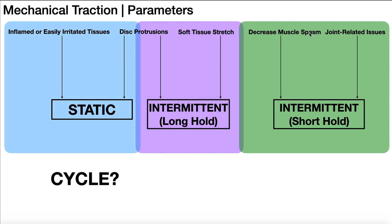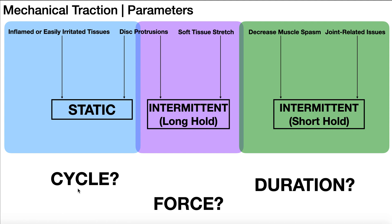For decreased muscle spasm and joint-related issues, these are also going to be intermittent traction, but they're going to be a short hold. This is really just an introduction to these indications because all we've done here is consider the cycle. We also need to consider the force and the duration of the treatment. Particularly with force, this is going to be a function of which part of the body we're doing the traction on — so we'll break this up into cervical traction and lumbar traction.